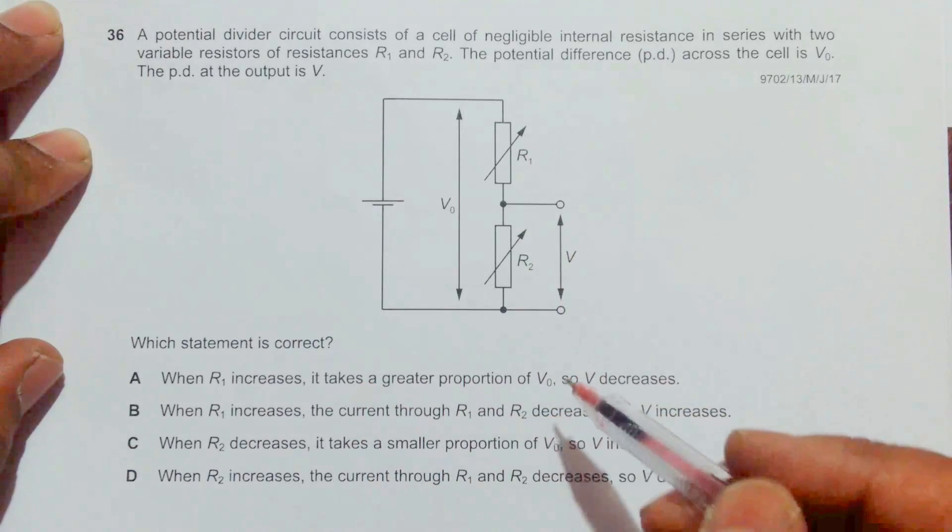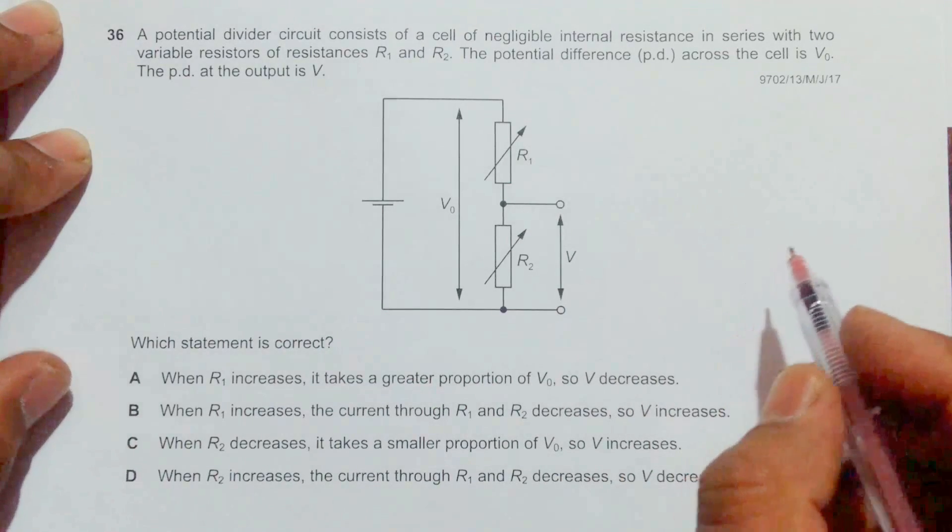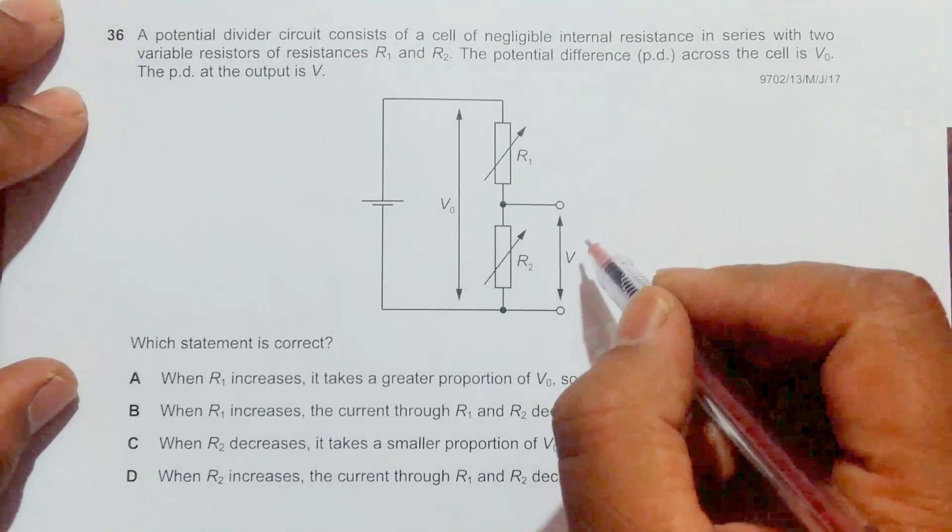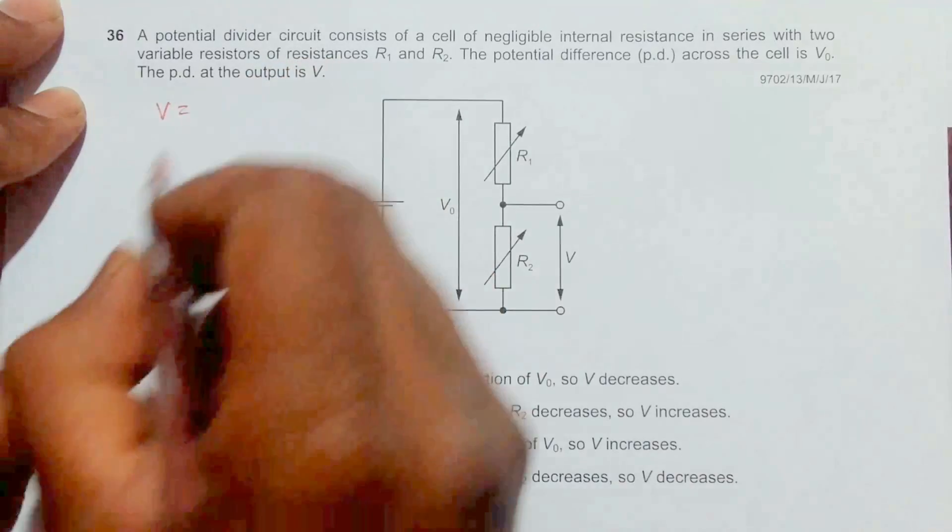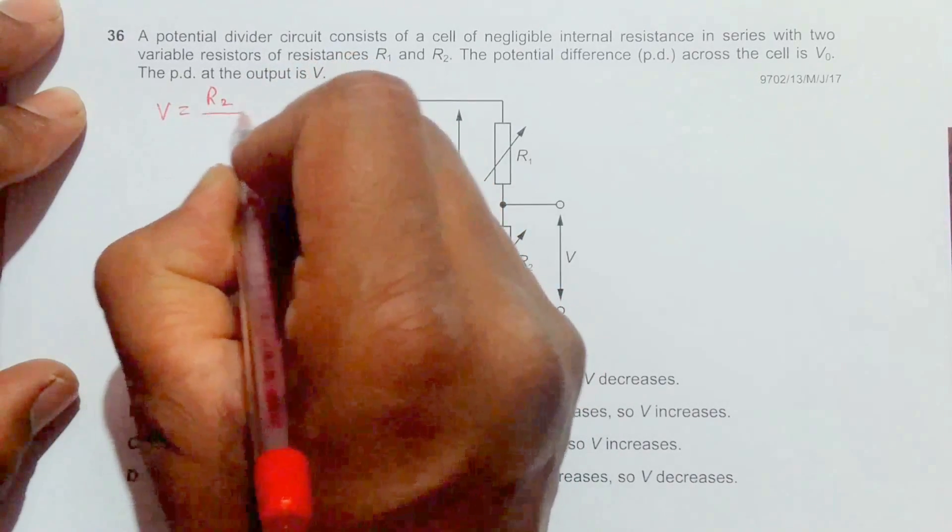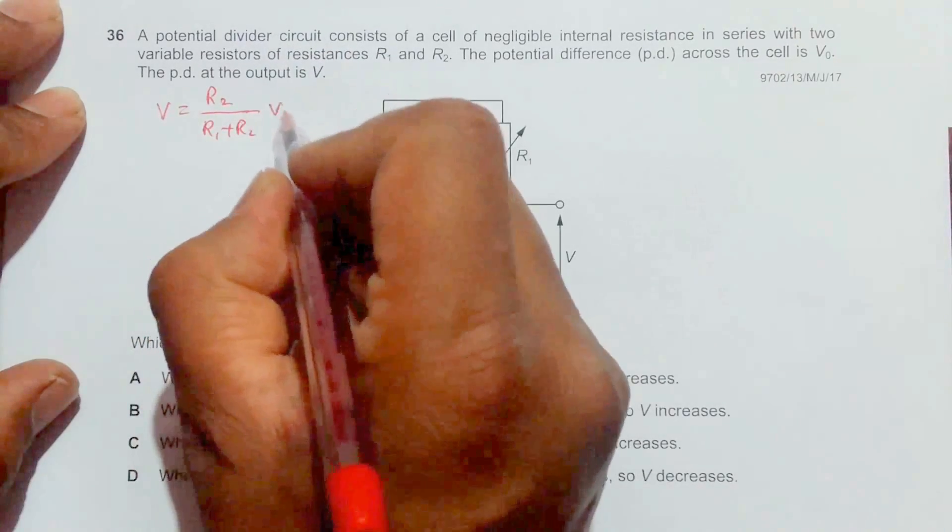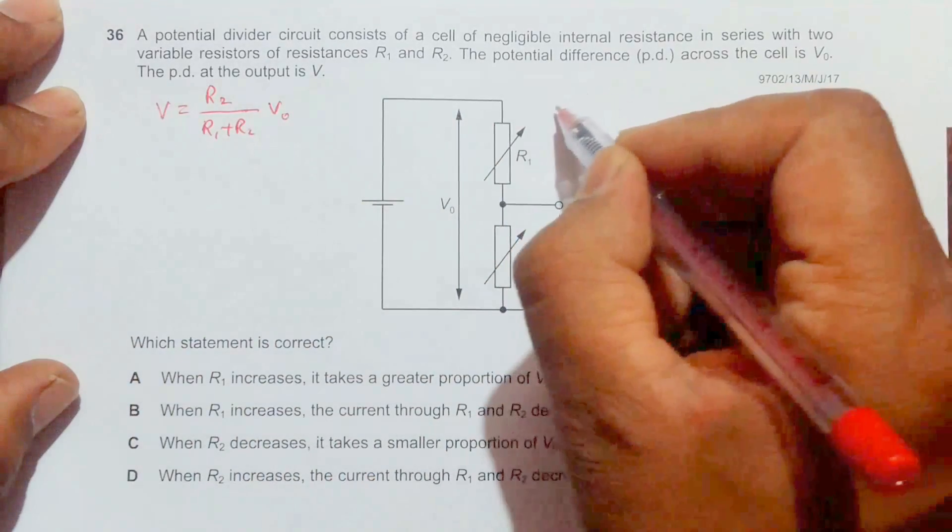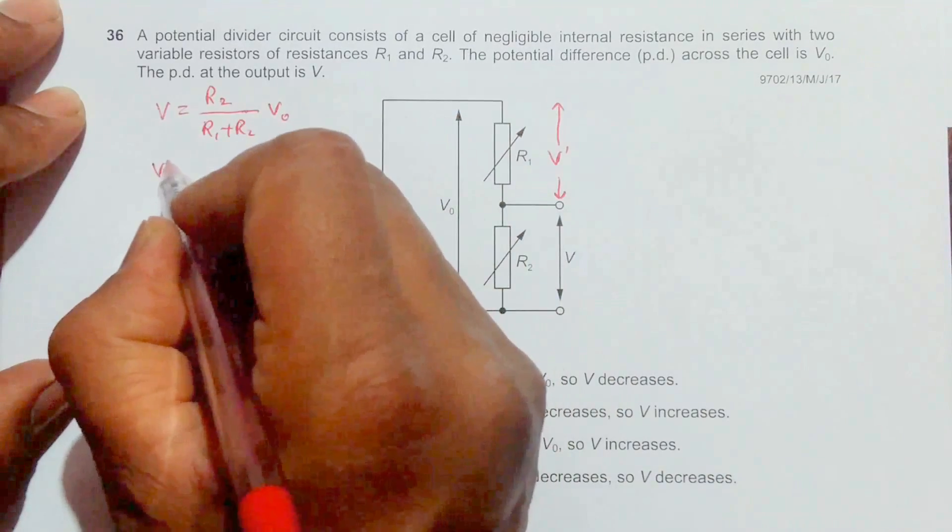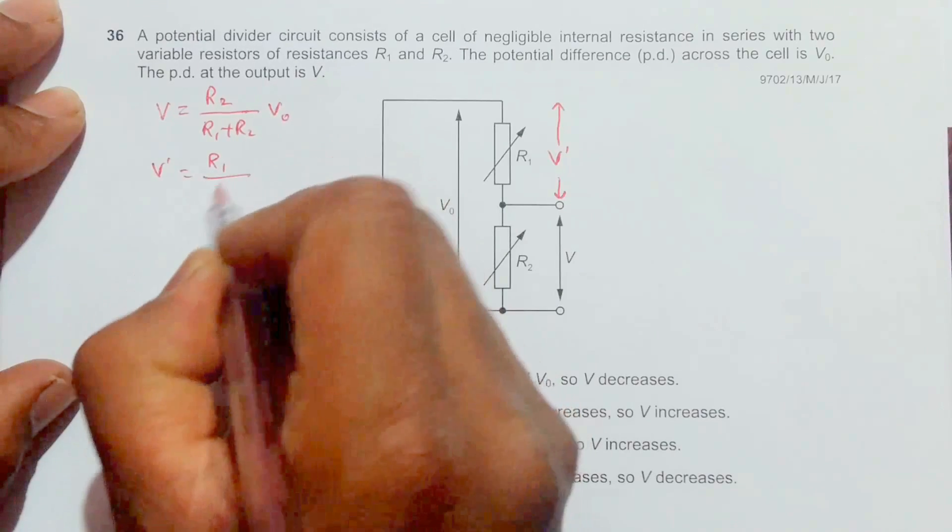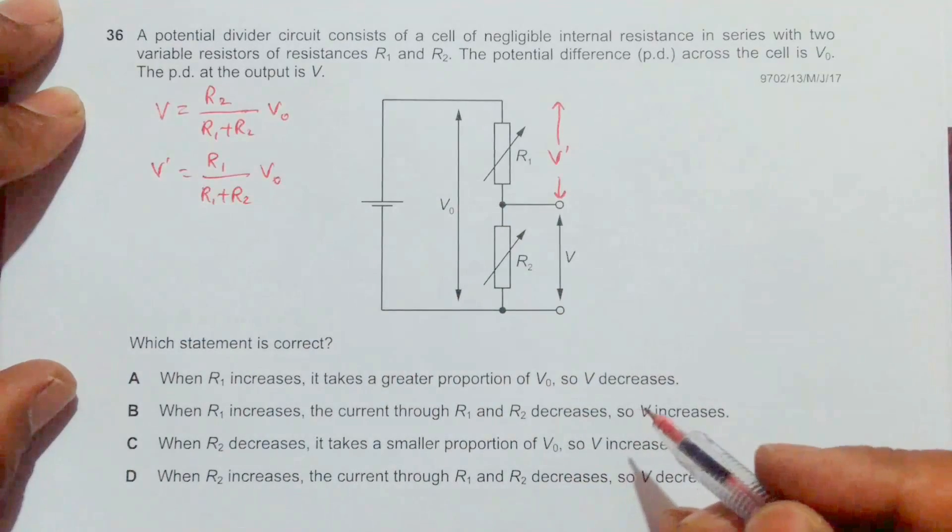We need to identify which statement is correct. Let's first establish the expression for potential difference V. According to the potential divider formula, V equals R2 divided by R1 plus R2, times V naught. If we denote the other PD by V prime, it should equal R1 divided by R1 plus R2, times V naught.